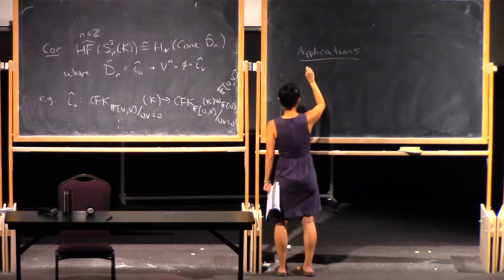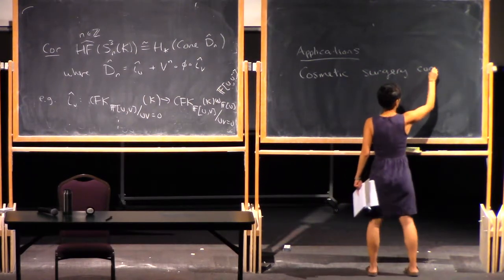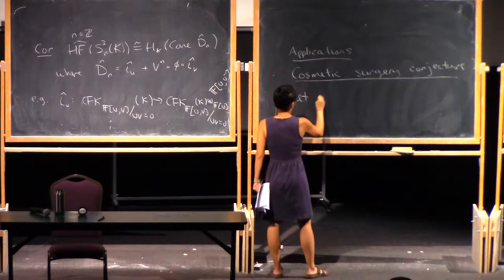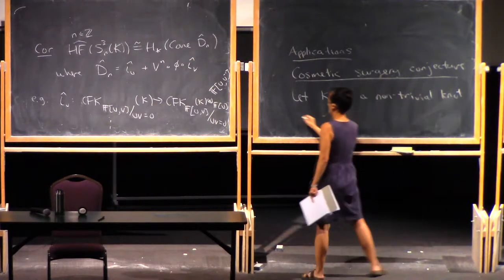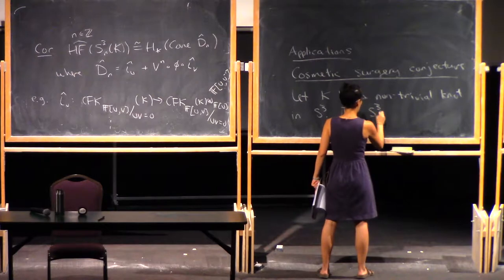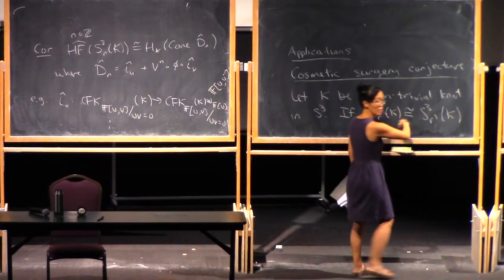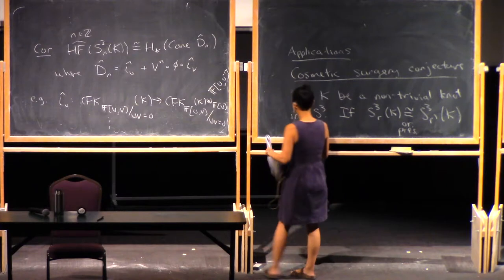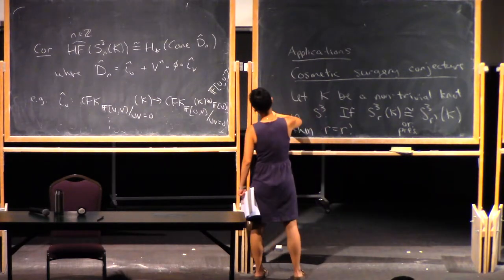Great. So there's something called the, sort of cutely named the cosmetic surgery conjecture. Which says that, let K be a non-trivial knot in the three-sphere. Well, it says that if r-surgery and r-prime surgery give you homeomorphic manifolds, this is orientation preserving, well, then the surgery coefficients actually had to be the same. So, oh, here, these can be rational numbers.